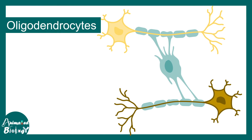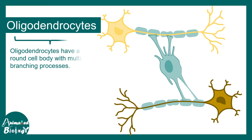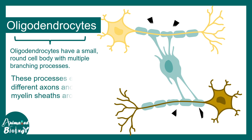Now let's look at oligodendrocytes from a different perspective. From a morphological perspective, oligodendrocytes have small cell bodies with multiple processes. Each of these processes reaches several axons and can form a myelin sheath around them.